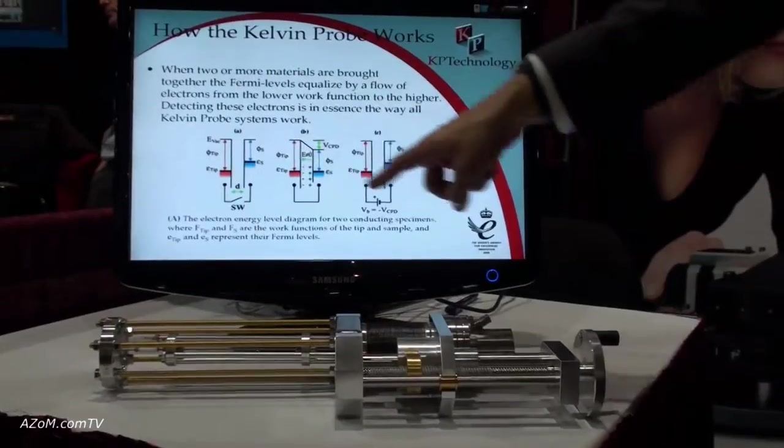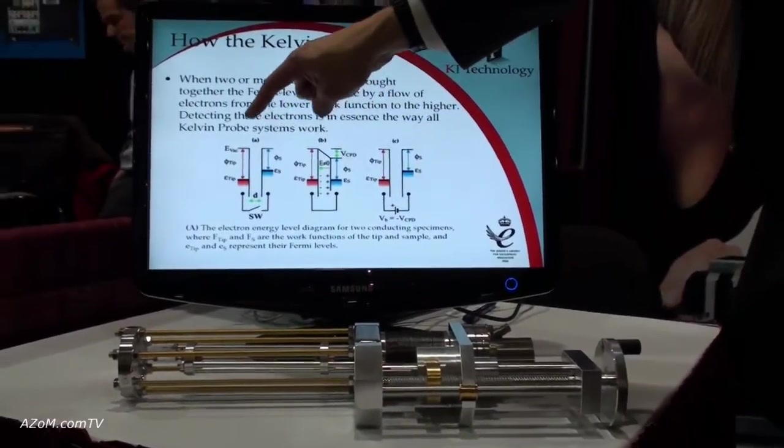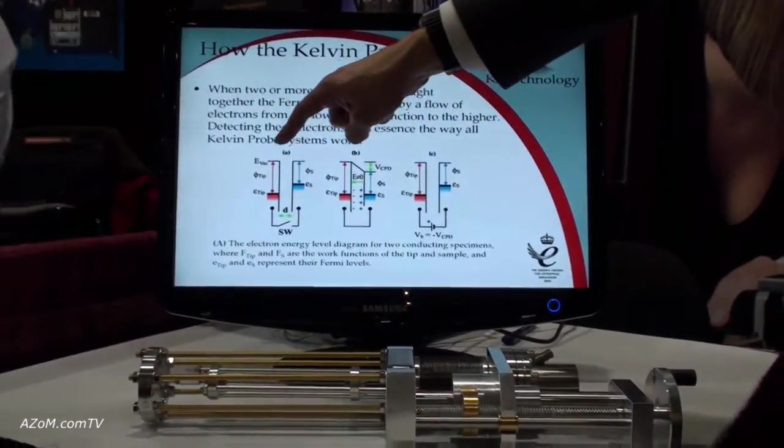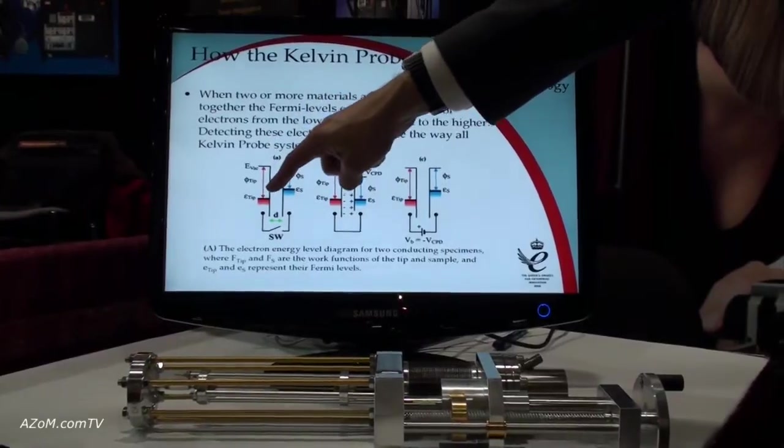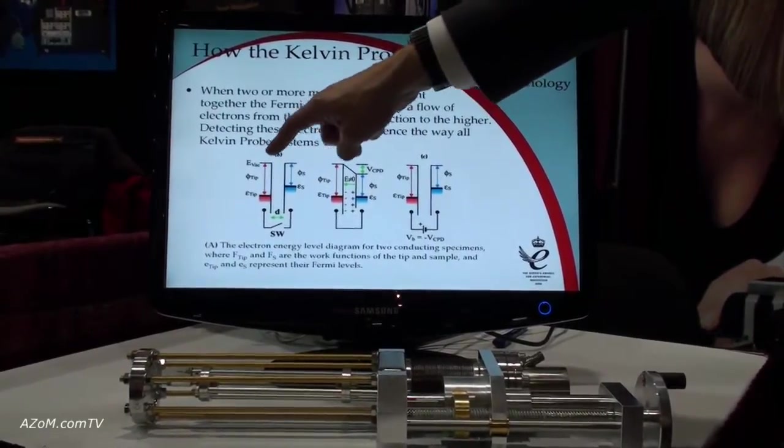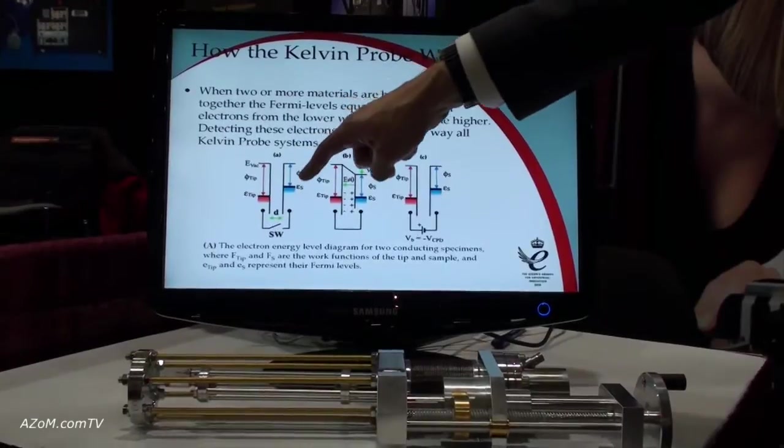This is an energy band diagram of how the Kelvin probe works. There are two metal surfaces, a tip and a sample, and they have two different Fermi levels from the vacuum level here, with the tip having a larger work function than the sample.